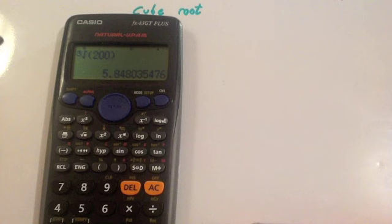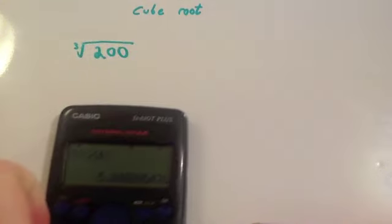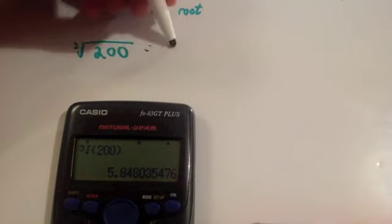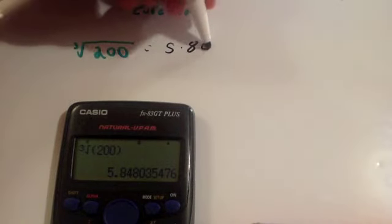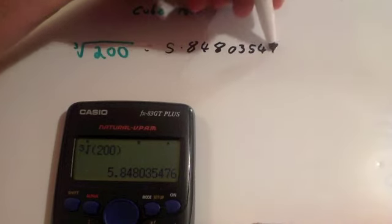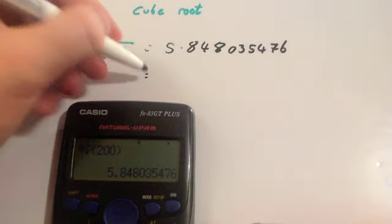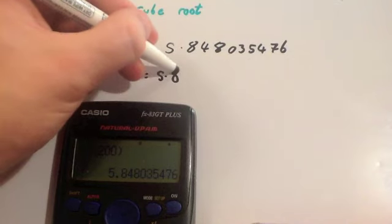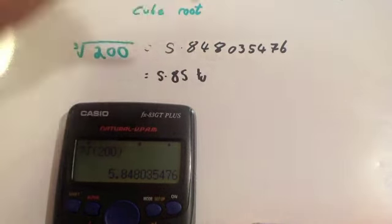So we'll just write that down. So equals 5.848035476, or equals 5.85 to two decimal places.